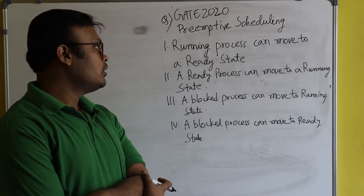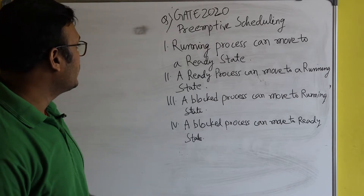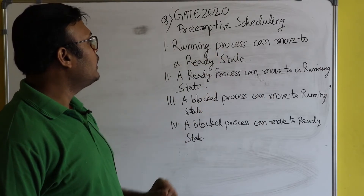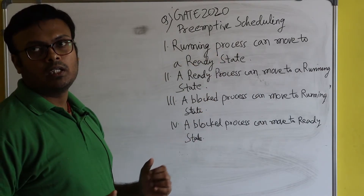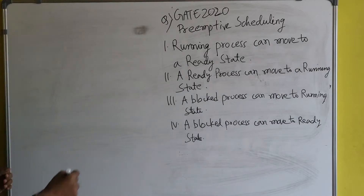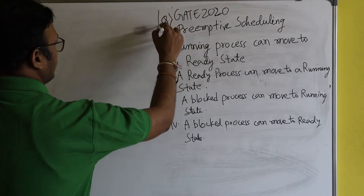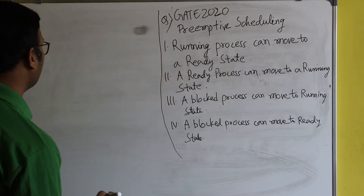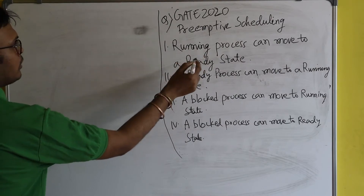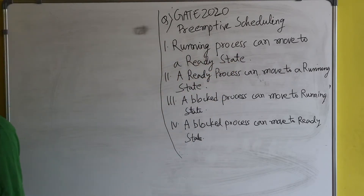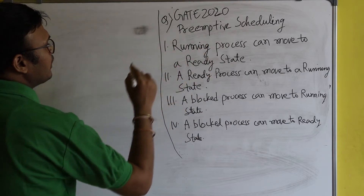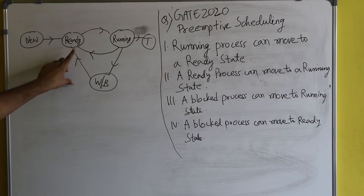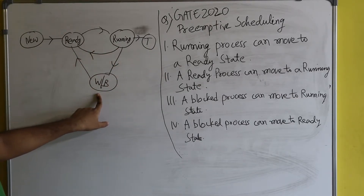Let's see how many statements are correct. In preemptive scheduling, a running process can move to a ready state — obviously. I'll draw a shorthand process state diagram based on what's required. The states are: new, ready, running, terminated, and wait/block state.